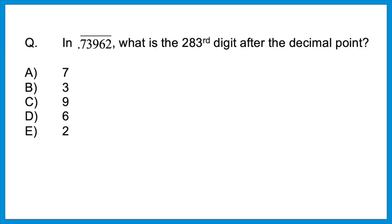The ACT really likes the concept of a repeating sequence and jumping to a multiple. In the repeating decimal .73962 (with a bar over those digits), what is the 283rd digit after the decimal point? That bar means those numbers repeat forever. The digit 2 is in the 5th spot, so 2 always lands on a multiple of 5. Going to 283, the closest multiple of 5 is 280 — so 2 lands on position 280. Then: 281 would be 7, 282 would be 3, so 283 would be 9. The answer is 9.